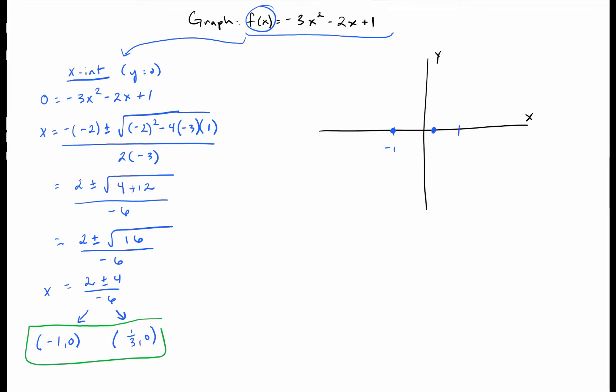Now that we found our x-intercepts, we just need to find our vertex. I know there's basically two options here. Our parabola is either going to be facing down or it's going to be facing up.